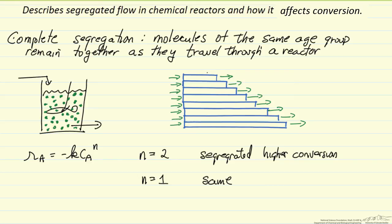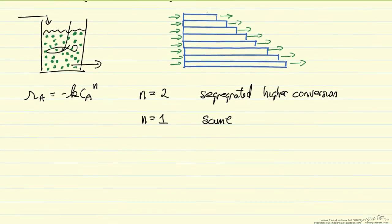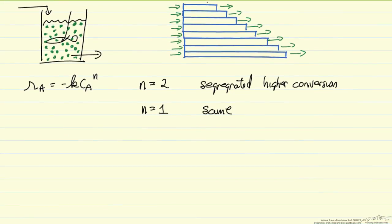And we can help visualize this. So first, if we want to be more general, n greater than 1, then segregated has the higher conversion. Likewise, n less than 1, micromixing would have the higher conversion.